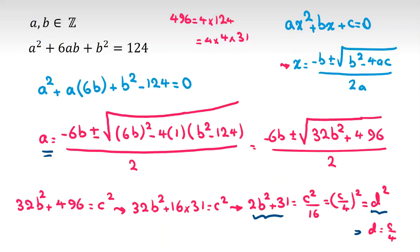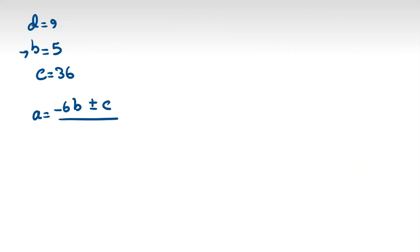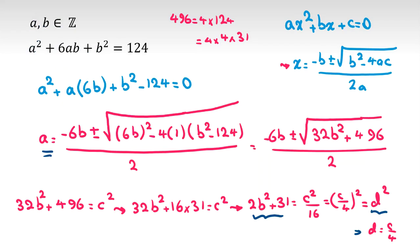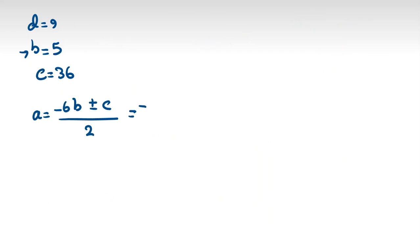I can say 2b squared plus 31 is d squared. a is what? Negative 6b plus minus - okay, so you can use that or we can say this part, the square root of that is c, so you can say plus minus c all over 2. Negative 6b is negative 30 plus minus 36 over 2. Negative 30 minus 36 is negative 66 over 2, and plus 36 will be 6 over 2. It will be negative 33 and 3.